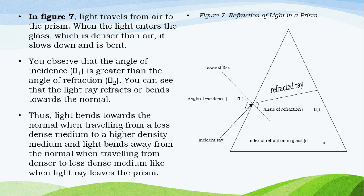Sa Figure 7, ang ilaw ay naglalakbay mula sa hangin patungo sa prism. Kapag ang ilaw ay pumasok sa baso, na mas makapal kaysa sa hangin, ito ay bumagal at bumaluktot. Mapapansin na ang angle of incidence ay mas malaki kaysa sa angle of refraction. Maaari mong makita na ang ilaw na sinag ay refractibo o baluktot patungo sa normal. Sa gayon, ang ilaw ay nakabaluktot patungo sa normal kapag naglalakbay mula sa isang hindi gaanong siksik na daluyan patungo sa isang mas mataas na density. At ang ilaw ay liko mula sa normal kapag naglalakbay mula sa masiksik hanggang sa hindi gaanong siksik na daluyan, tulad ng paghihiwalay ng light rays sa prism.